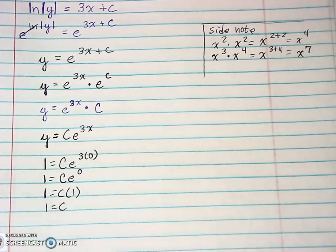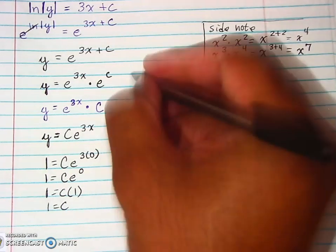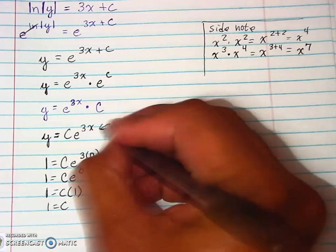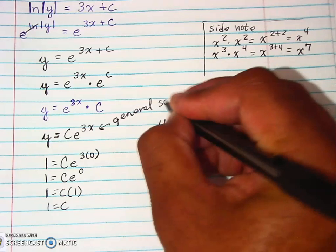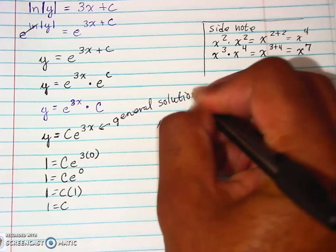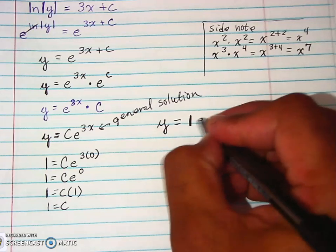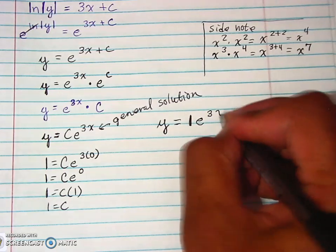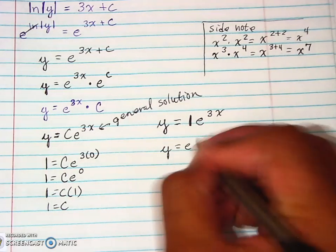So C equals 1. So technically, when it comes to our actual particular formula, and again this is our general solution, our particular solution would just be 1 times e to the 3x power, or we just say y equals e to the 3x power. And that's it.